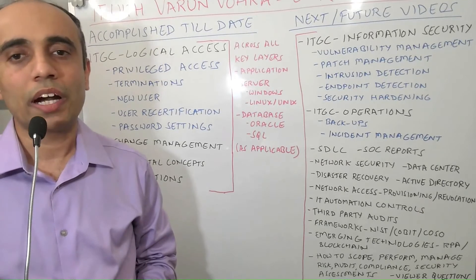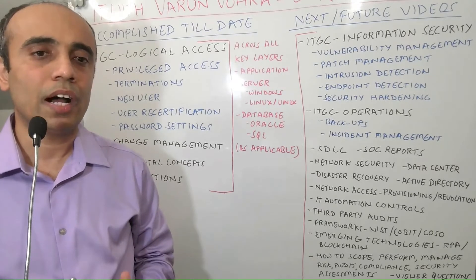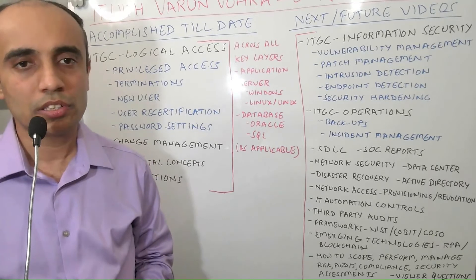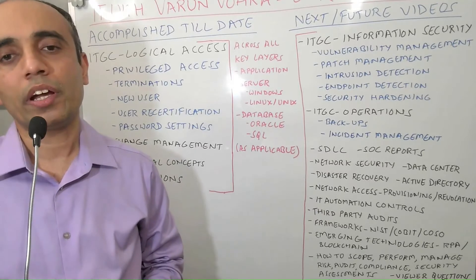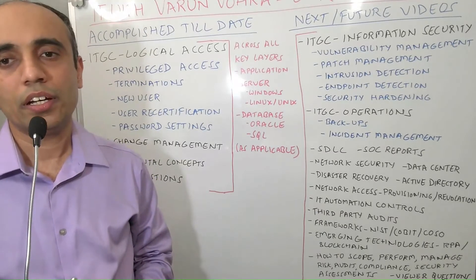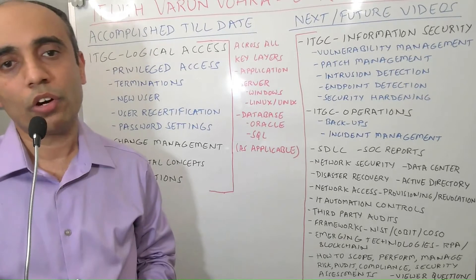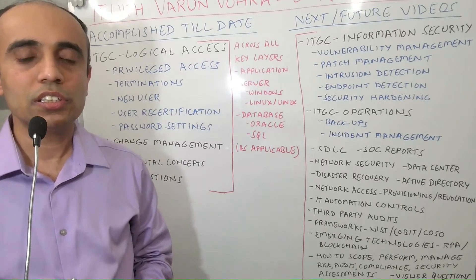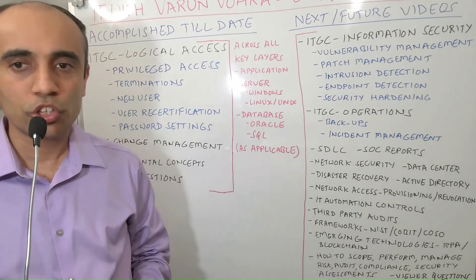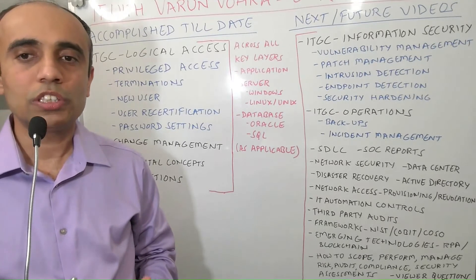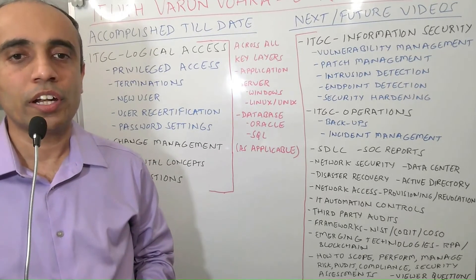Once our ITGC journey wraps up, we will move on to cover other areas relevant from an IT risk, control, audit, compliance, and security lens: operations like SDLC, SOC reports, network onboarding and offboarding, disaster recovery, data center, Active Directory, IT automation controls, third-party audits, frameworks like NIST, COBIT, COSO, emerging technologies like RPA and blockchain, and the whole concept of understanding how to scope, perform, and manage risk, security, audit, and compliance assessments.